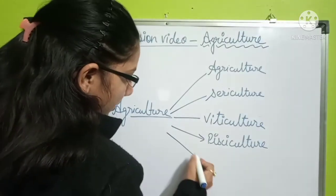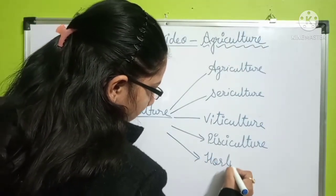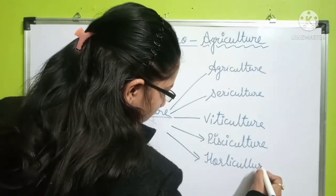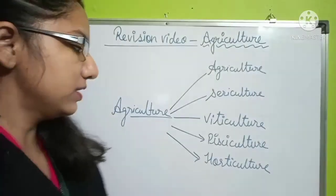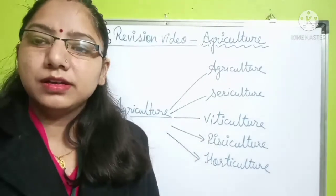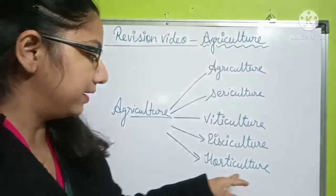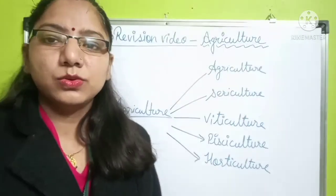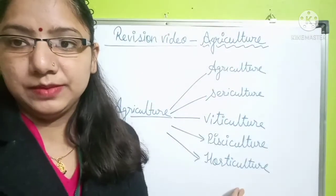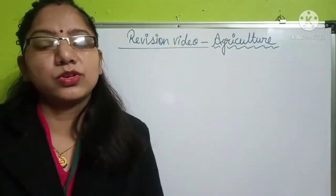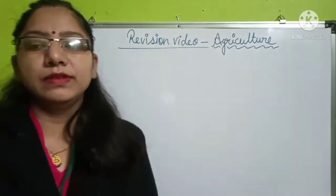Another cultivation is horticulture. Horticulture means growing fruits, flowers, and vegetables. So there are a total of five types of activities which we can include in agriculture. That was the introduction of agriculture and the different cultivations correlated with it.